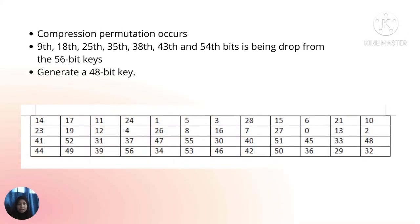And lastly, compression permutation is applied where the 9th, 18th, 25th, 35th, 38th, 45th, and 54th bits are dropped from the 56-bit key, resulting in a new 48-bit key, as shown in the table below. Then we will move to explain the expansion permutation process.